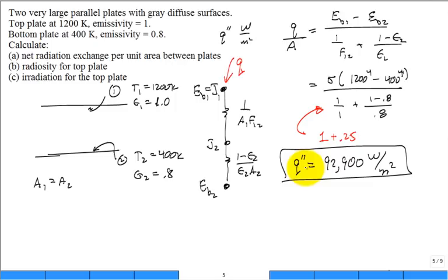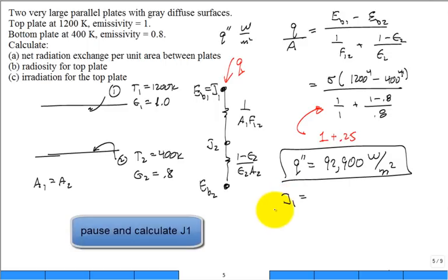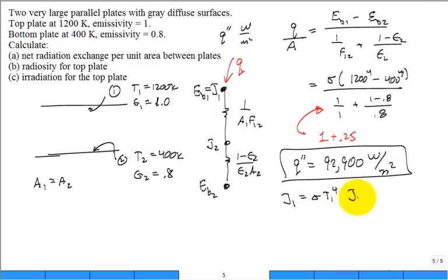So now what we do is we'll go ahead and stick in our numbers. This is sigma times our 1,200 to the 4th minus 400 to the 4th, and then 1 over 1 plus 1 minus 0.8 divided by 0.8. If I focus on the denominator, that's 1 plus 0.2 divided by 0.8, which is 0.25. So basically, sigma T to the 4th minus T to the 4th, and then you divide by 1.25. We calculate that Q double prime comes in to 92,900 watts per meter squared. Sometimes I'll put the kilo in there, sometimes I won't. If you put a kilo, sometimes you forget about the kilo, and then you've got a factor of 10 to the 3 error.